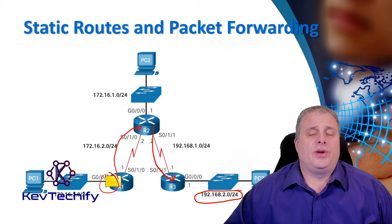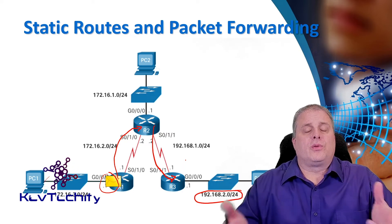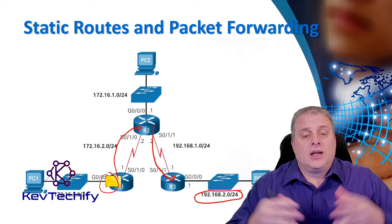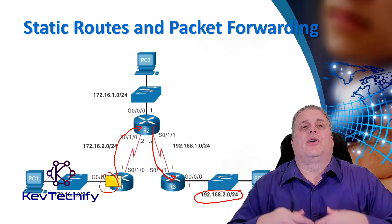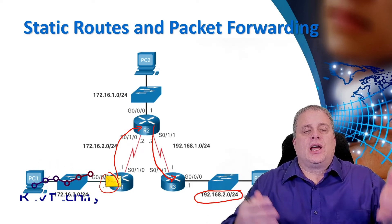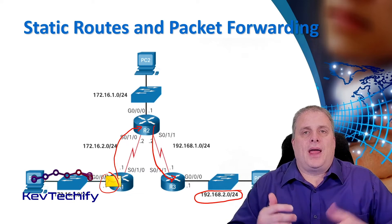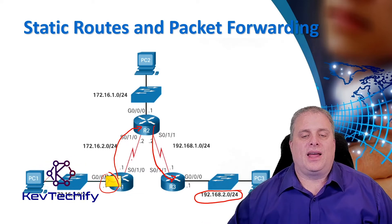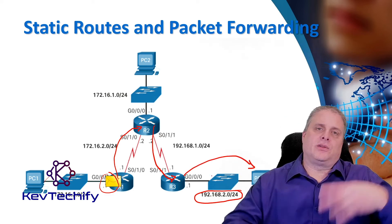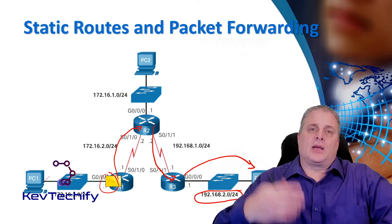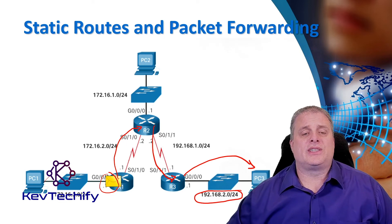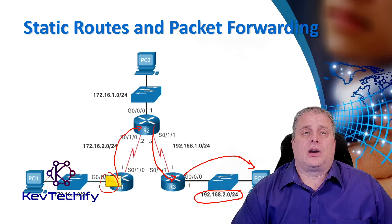But before we send it off, we have to build our layer 2 frame. If router three knows the MAC address, we can build the layer 2 frame. If not, router three needs to send out an ARP request. PC3 hears it and sends back its MAC address. Once router three gets that MAC address, we can build the layer 2 frame and send that information on to PC3. PC3 can get it, de-encapsulate the layer 2 frame, de-encapsulate the IP address, and process that accordingly. That's how static routes get information across our network.